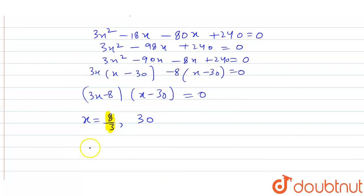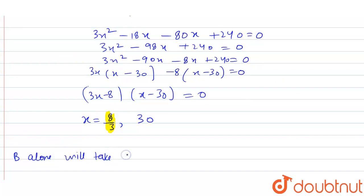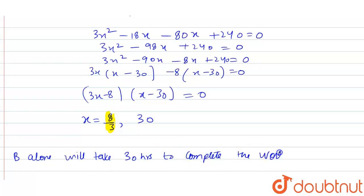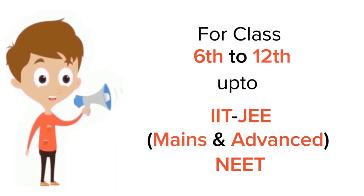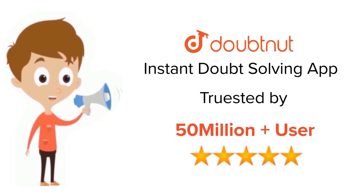So B alone will take 30 hours to complete the work. This will be our answer. Thank you. For class 6 to 12, IIT JEE and NEET level, trusted by more than 5 crore students — download the Doubtnut app today.